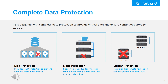Besides satisfying the massive performance and capacity requirement, EonStore CS is also designed with complete data protection to ensure data continuity and continuous storage services. The protection has three layers. For disk protection, EonStore CS provides RAID protection to prevent data loss from disk failure. For node protection, EonStore CS supports data redundancy across multiple nodes to prevent data loss from a node failure. And finally, for cluster protection, EonStore CS supports data remote replication to back up data in another site. With these three layers of data protection, if any element fails, the data will not be lost.